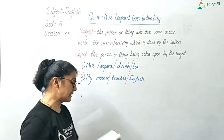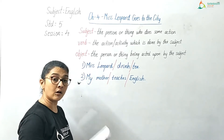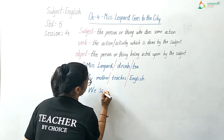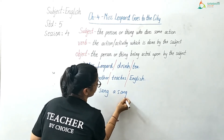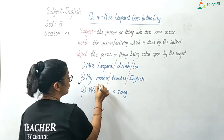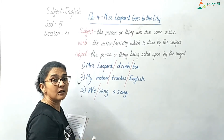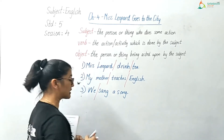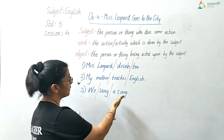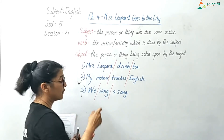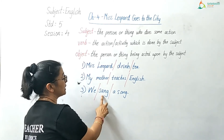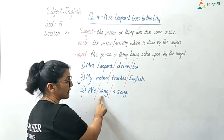The third sentence is: We sang a song. Who sang a song? 'We' is the subject. Then what did we do? We sang — so 'sang' is the verb, the action word. And we sang what? A song — that is the object. 'We' is subject, 'sang' is verb, and 'a song' is object. Just separate them by doing a slash after 'we' and a slash after 'sang.'